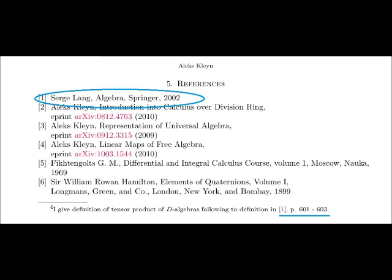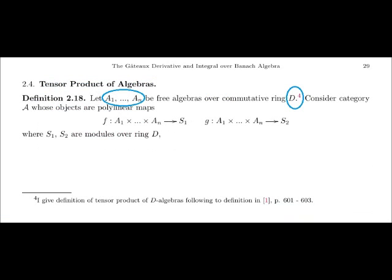We consider properties of polylinear maps in a separate lecture. In this lecture, we consider the definition of tensor product of three algebras. I give the definition of tensor product of the algebras, aligned to the definition in the algebra textbook by Serge Lang, pages 601 to 603. Let A1, ..., AN be three algebras over commutative ring D.